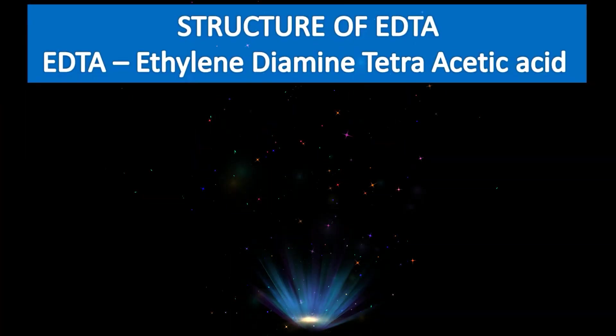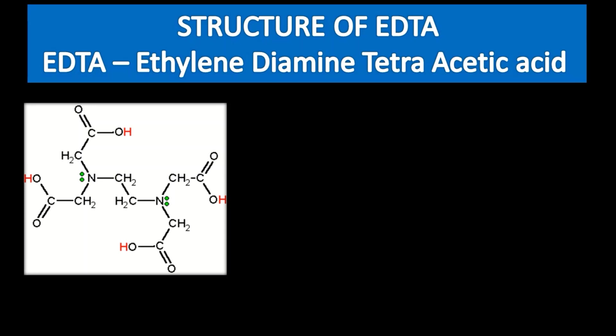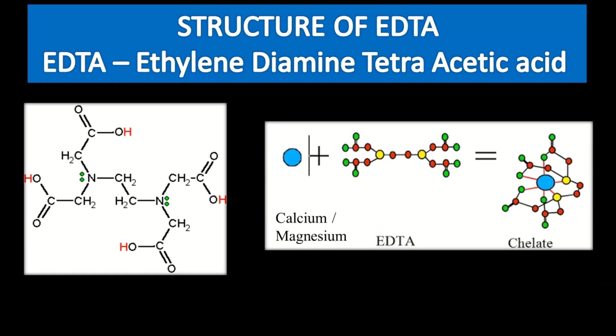Before entering into the detailed discussion about the experiment and calculations, we should know what EDTA is and what its structure is. EDTA is ethylene diamine tetra acetic acid. It is a hexadentate ligand, which means there are six coordination spots available. These spots will be involved in complex formation, and calcium and magnesium form chelate complexes with EDTA.